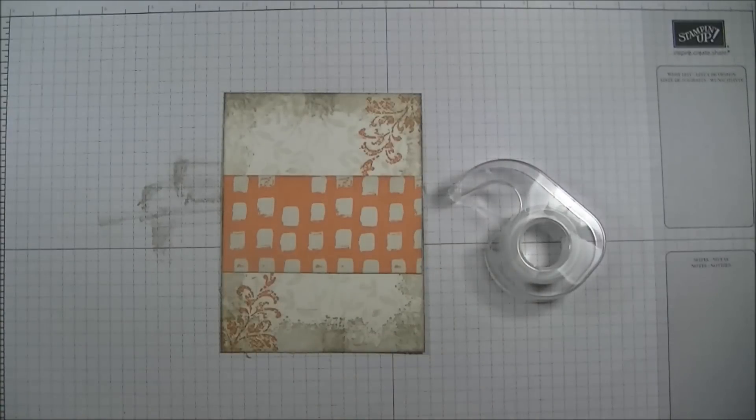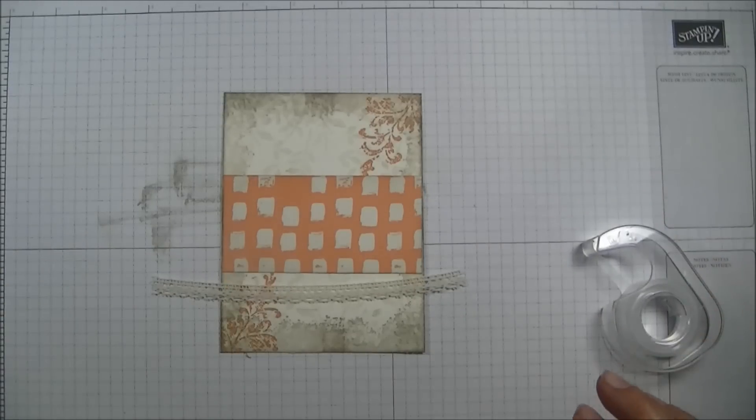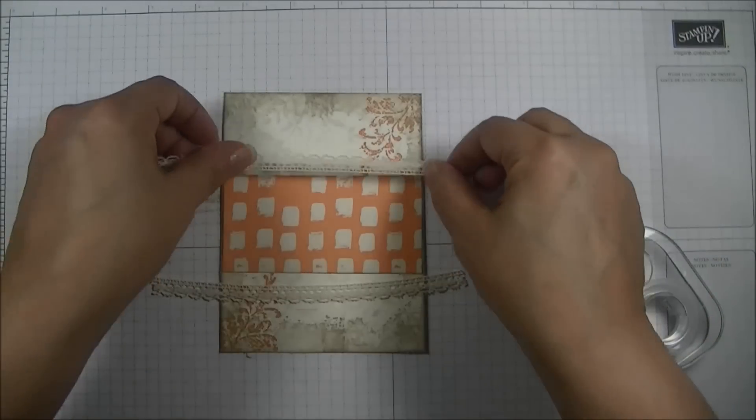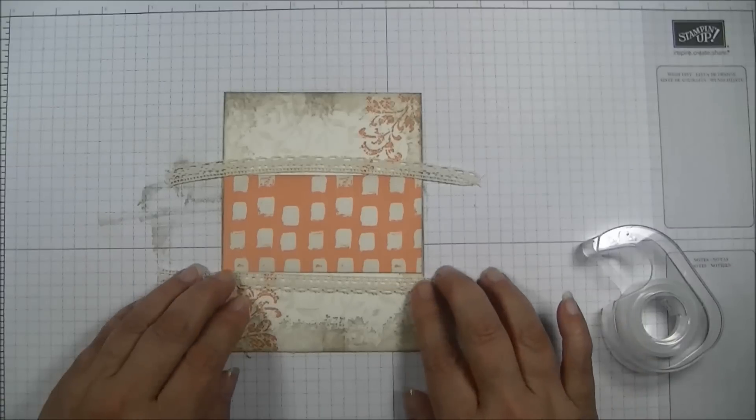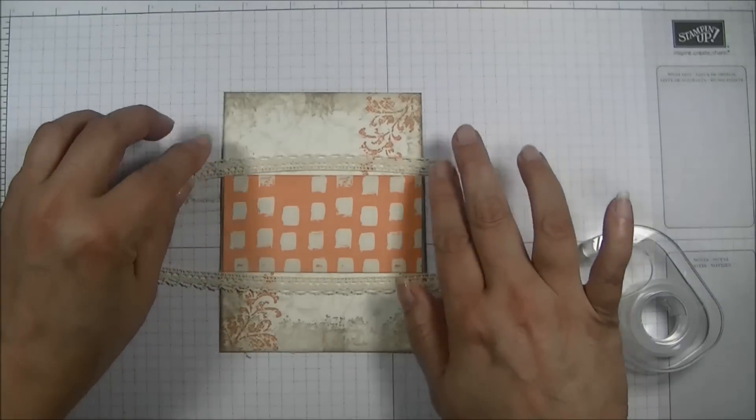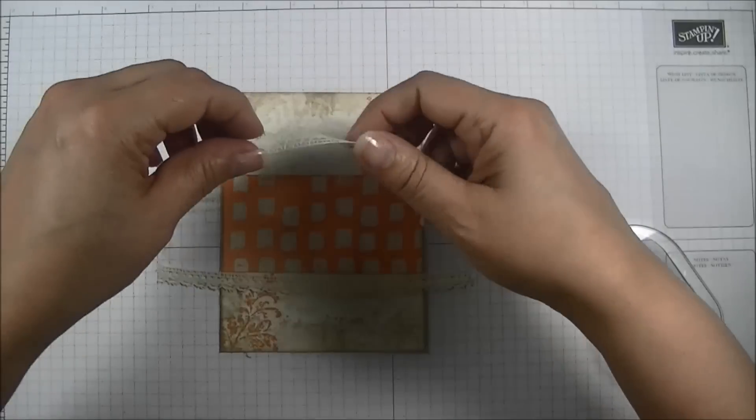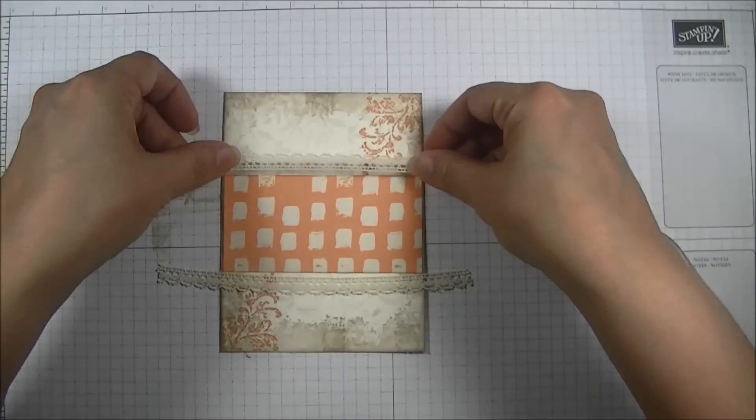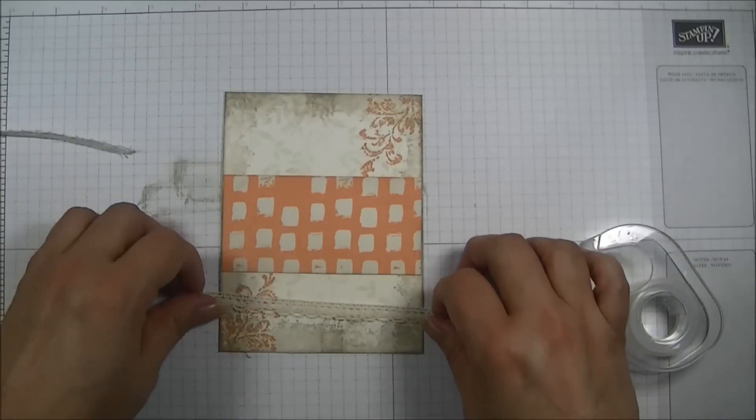So now my next step is to grab my snail. I am going to flip that over and get some snail on here. Then I am going to put that on my card front right across the middle. I have my designer series paper attached to the front of the card front.